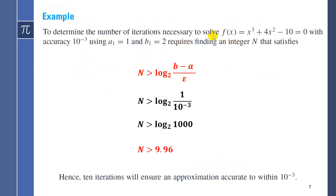To determine the number of iterations necessary to solve f(x) = x³ + 4x² - 10 = 0 with accuracy 10⁻³ using interval [1, 2]: according to our formula, n > log₂((b - a)/ε). Our ε = 10⁻³, and b - a = 2 - 1 = 1, so n > log₂(1000). Using a calculator, log₂(1000) ≈ 9.96. Since n must be a natural number, we need 10 iterations to ensure an approximation accuracy to within 10⁻³ using the bisection method.